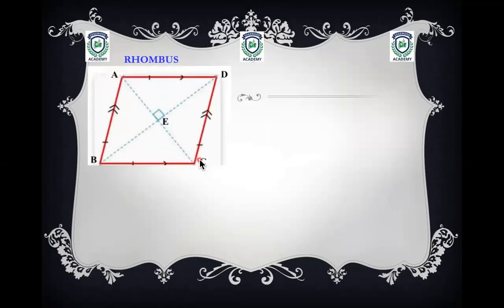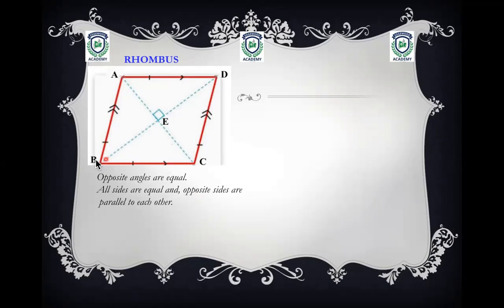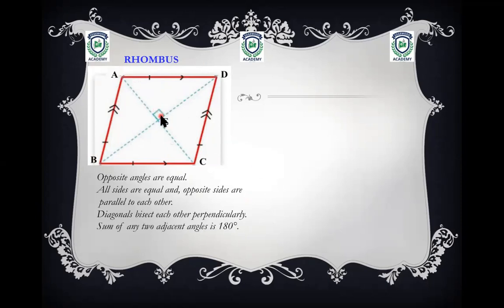Rhombus is a special shape. Opposite angles are equal — angle B equals angle D, and angle A equals angle C. All sides are equal and opposite sides are parallel to each other. The diagonals bisect each other perpendicularly — at point E the diagonals meet and form 90 degrees. The sum of any two adjacent angles is 180 degrees.